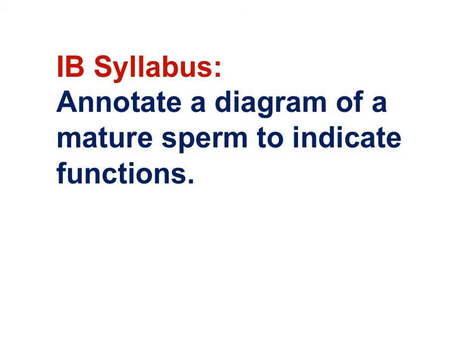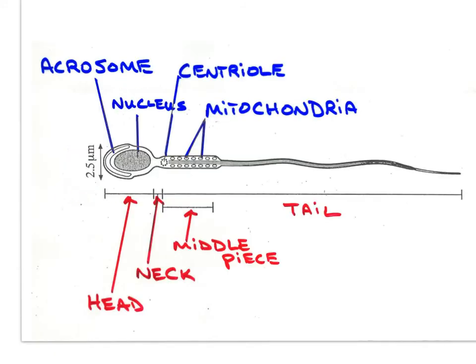Let's take a look at the structure of spermatozoa. The relevant IB syllabus statement is: annotate a diagram of a mature sperm to indicate functions. Here is a diagram of a sperm — you can see the haploid nucleus, the mitochondrion, and the flagella. The acrosome is like a vacuole that contains enzymes necessary for the sperm to reach the egg. The acrosome breaks open as the sperm contacts the outer layers of the egg and digests away those outer layers, allowing the sperm cell membrane to contact the egg cell membrane. Details on this process will be provided in Topic 11 Part 10, Reproduction B.